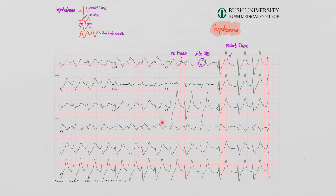What is this mess? What is the rate? The rate's probably something fast. What's the rhythm? I don't know. Are there any P waves? There are not any P waves. Is there a QRS? Where is it starting from? Maybe somewhere in the ventricle? Axis — it's tough to say because this is just a hot mess here.